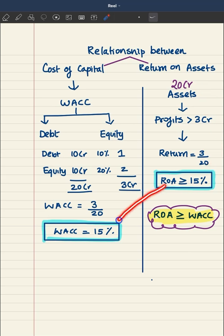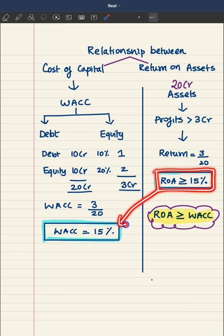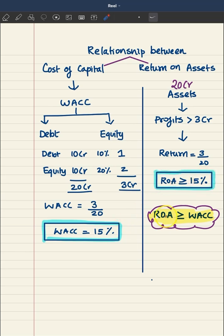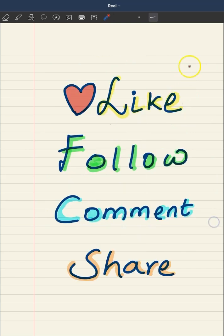This 15% is your Weighted Average Cost of Capital as well. So what is the condition? The return on assets should be at least equal to the Weighted Average Cost of Capital — that's why we use the sign greater than or equal to. The relationship between return on assets and cost of capital is: a business should generate return on assets greater than or equal to Weighted Average Cost of Capital.